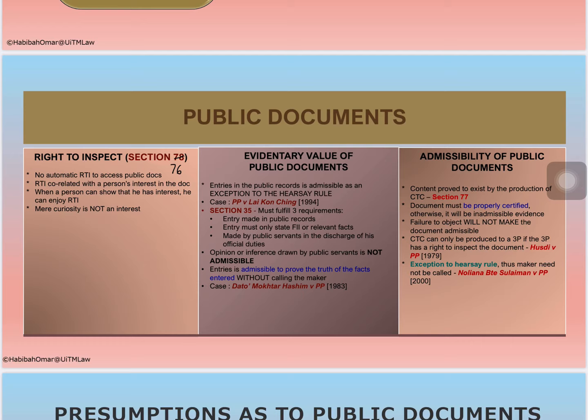Under section 76, a certified copy of a public document is available only if you have a right to inspect it. There is no automatic right to inspect or access a public document. For example, specifications of military ships or contractual arrangements between the Ministry of Defence and a private company are public documents, but you do not have access to them. Many reports made by select committees in Parliament are also inaccessible. Being a public document does not mean the public have a right to access it.